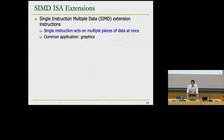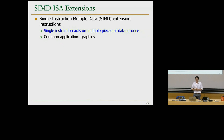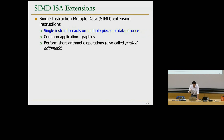SIMD instructions are well-suited to regular, repetitive operations — for example, image processing, where we apply the same computation to hundreds of thousands or millions of pixels. That's why SIMD processors and ISA extensions are effective for graphics and image processing. In the 1990s, as multimedia applications became more popular, computer architects started introducing SIMD extensions into CPUs to exploit this regularity.